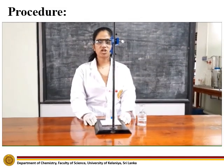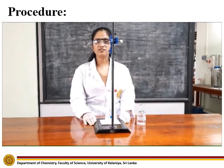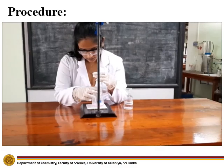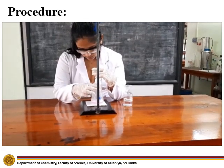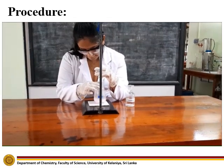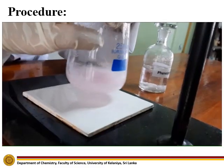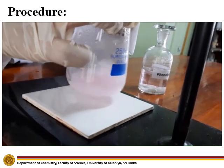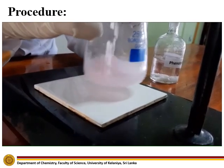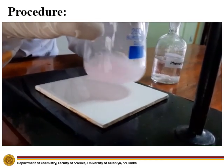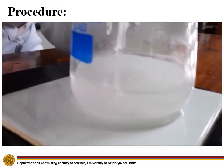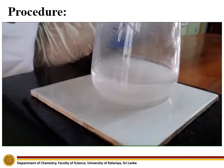Now let's also titrate 25 ml of calcium hydroxide solution at 90°C against HCl solution. This is the end point. Record the burette reading.